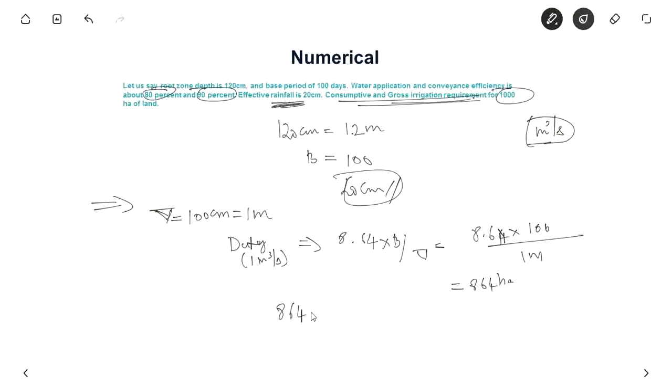So 8.64 hectares needs 1 cubic meter per second. How much will be for 1000 hectares? Which is nothing but 1000 divided by 8.64, equals 1.16 cubic meters per second. So this is the consumptive irrigation requirement.